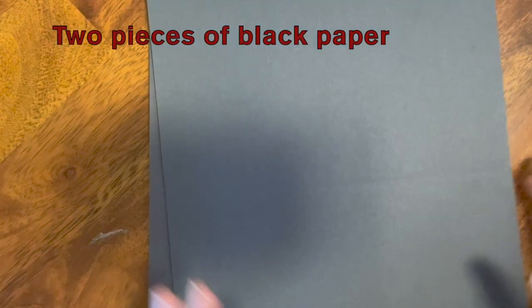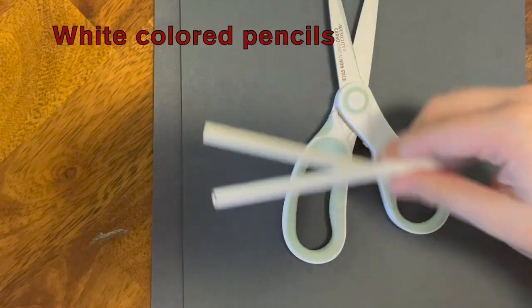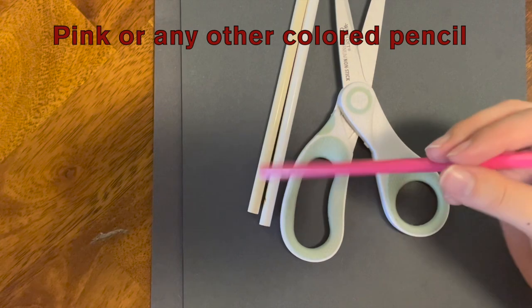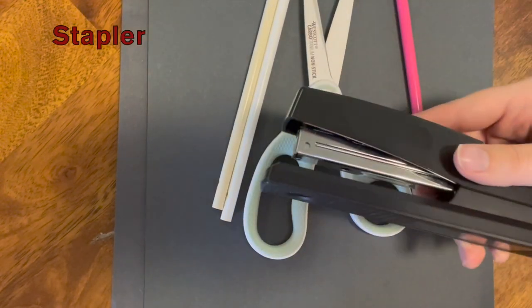To make our question buddy we are going to need two pieces of black paper, scissors, white colored pencils, pink colored pencil or any color you'd like to draw the spider's mouth, and a stapler.